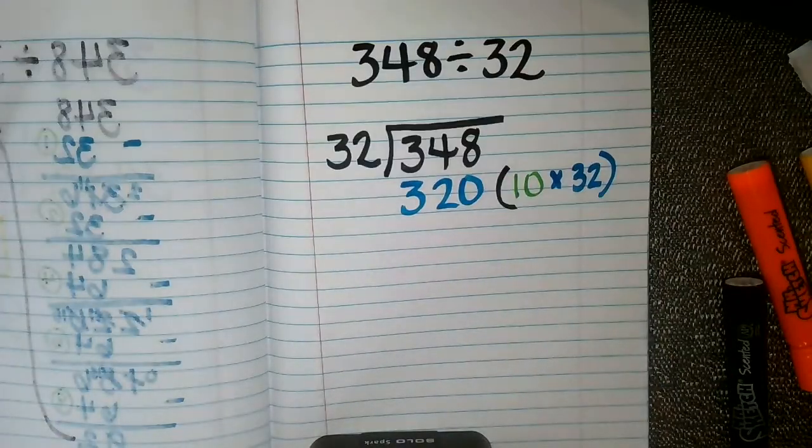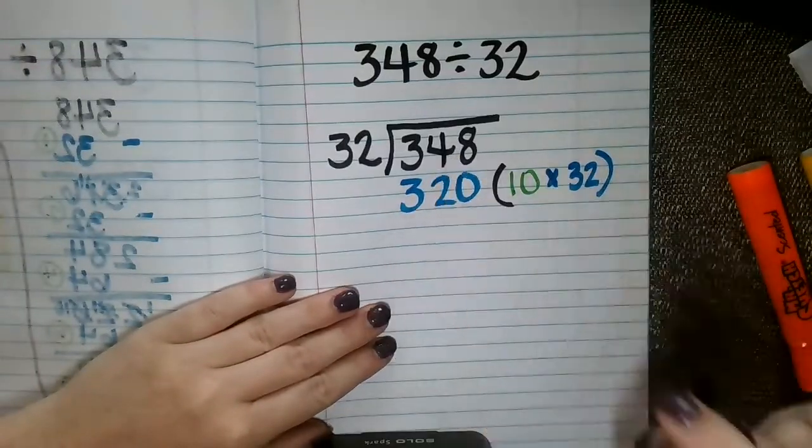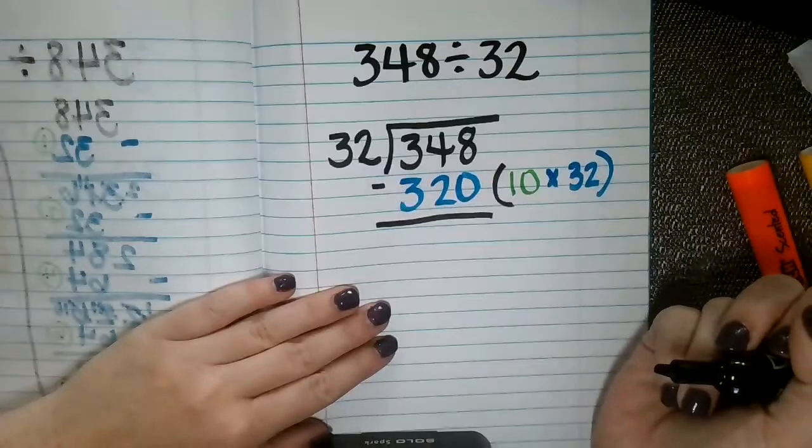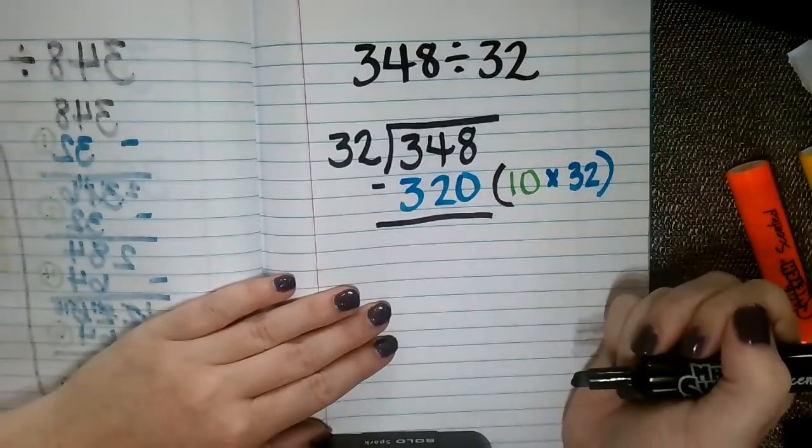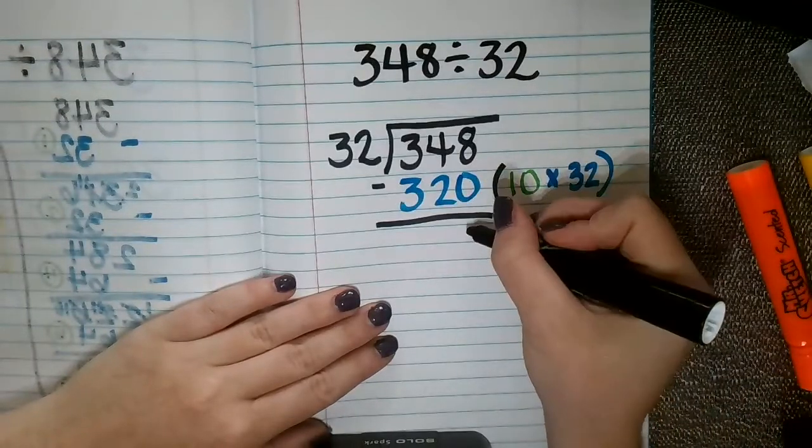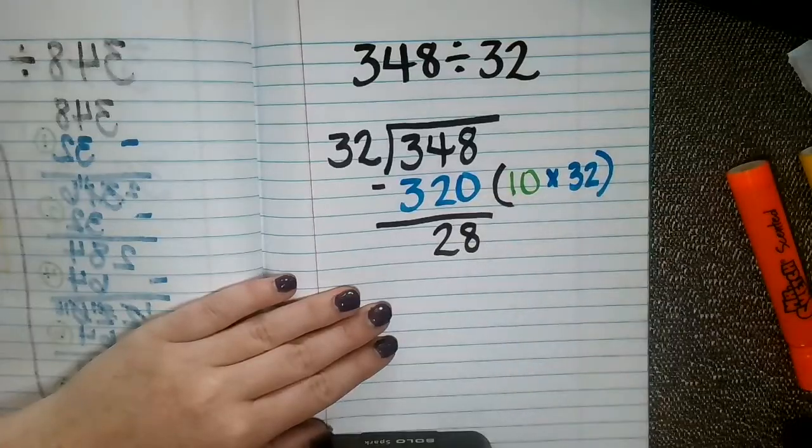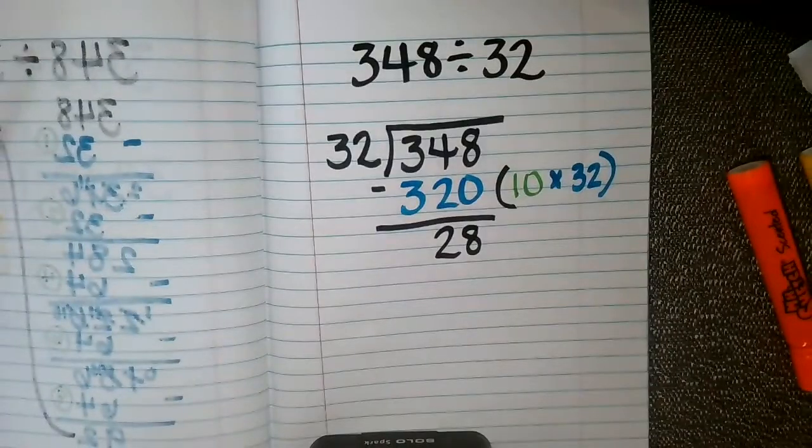So when I find a value that is close to my dividend, then I'm just going to subtract like I would in the long division strategy, and I am going to subtract 348 minus 320. Well, I know 8 minus 0 is 8, 4 minus 2 is 2, and 3 minus 3 is nothing. So I'm left with 28 here.